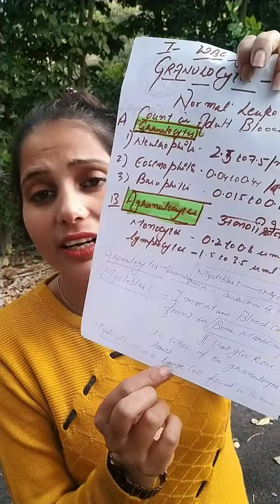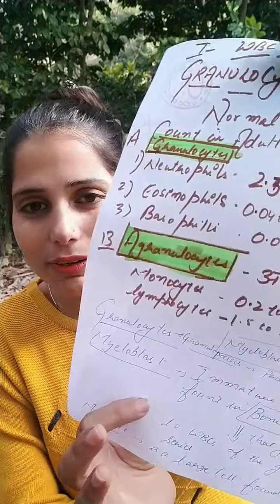The myeloblast develops into a myelocyte. What is a myelocyte? It is a large cell found in the bone marrow. The myeloblast is in an immature state; as it matures, it is called a myelocyte. This myelocyte process is part of granulopoiesis, ultimately forming the granulocyte cells.